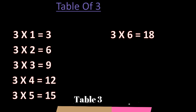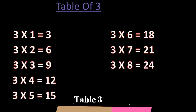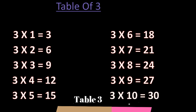3 sixes are 18. 3 sevens are 21. 3 eights are 24. 3 nines are 27. 3 tens are 30. So next table, table of 4.